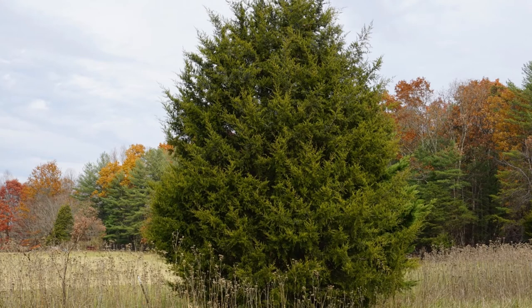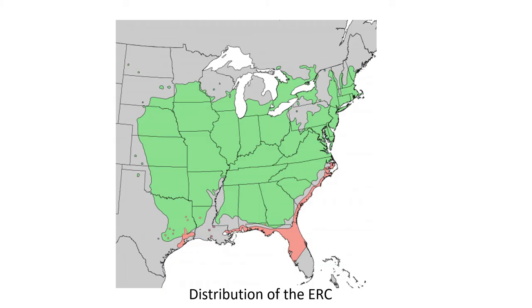My project is centered around the eastern red cedar, which is a juniper tree that you've probably seen in your backyards or along roads. The eastern red cedar is native to the eastern portion of the United States, meaning it's naturally found there and was not brought in from another location, but this species has been greatly expanding its range in the past 50 years.